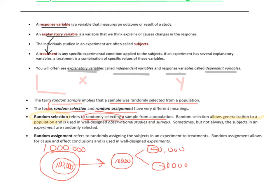Random assignment is an added piece to experiments. It refers to randomly assigning the selection of people you already have to two different groups. You need random assignment because it allows you to conclude cause and effect in your experiments. You can only conclude cause and effect with experiments — nothing else. Only an experiment has random assignment, which allows you to have two groups with no bias because you're breaking up the people randomly, giving you a valid cause and effect conclusion.